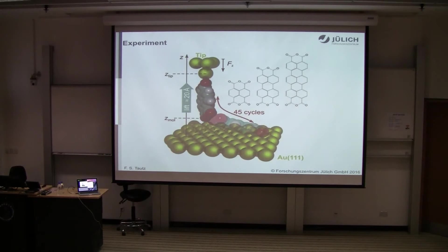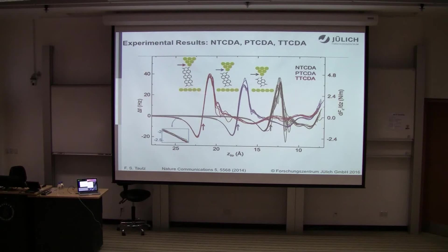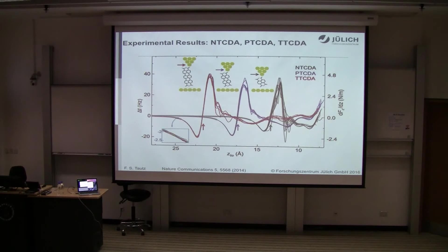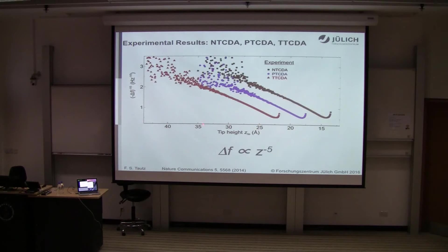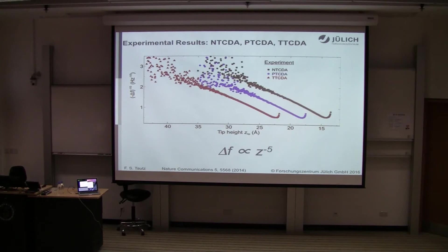We go up and down many times and do this for three different molecules, obtaining these curves: red for the longest molecule, black for the shortest. They are displaced on the axis because they have different lengths. We want to fit the asymptotic region highlighted in gray. Plotting the data on a scale where frequency shift proportional to Z^(−5) gives a more or less straight line. This confirms that the force gradient goes as Z^(−5) if the van der Waals force goes as Z^(−3).